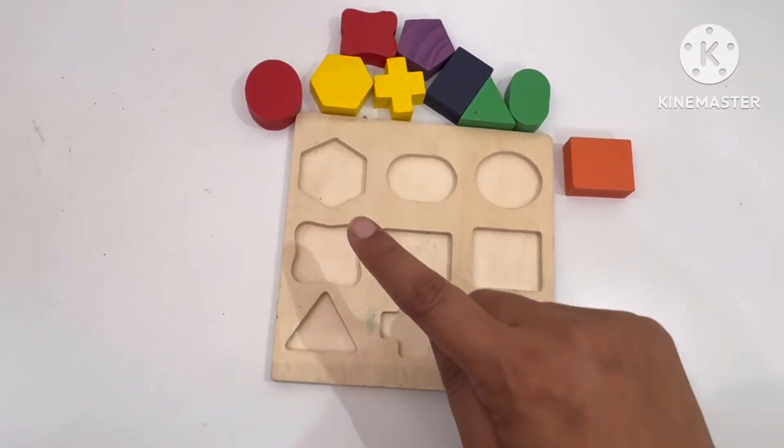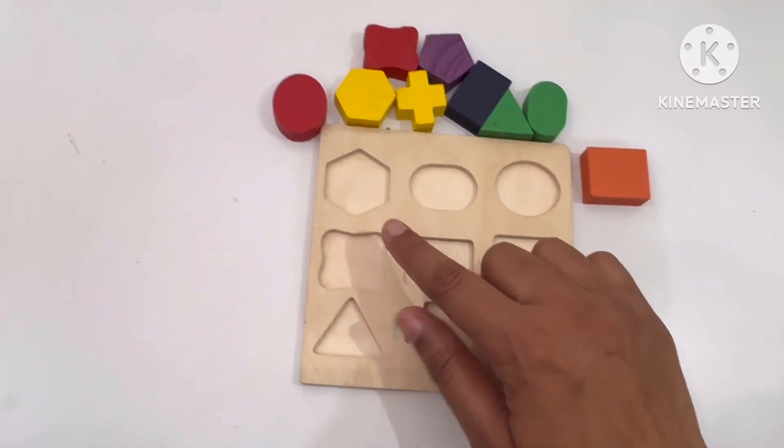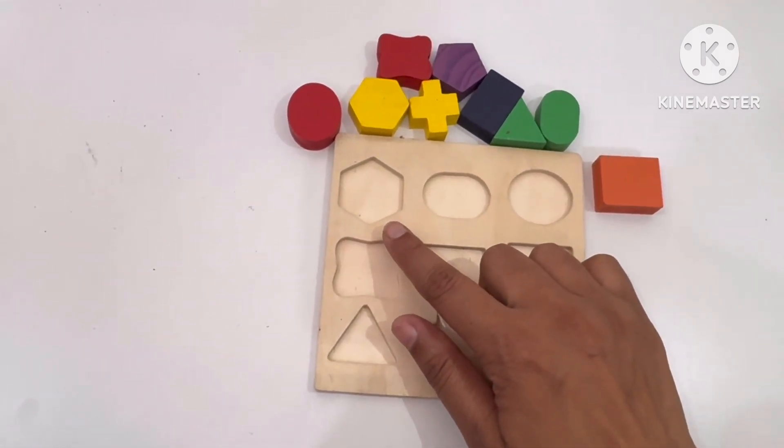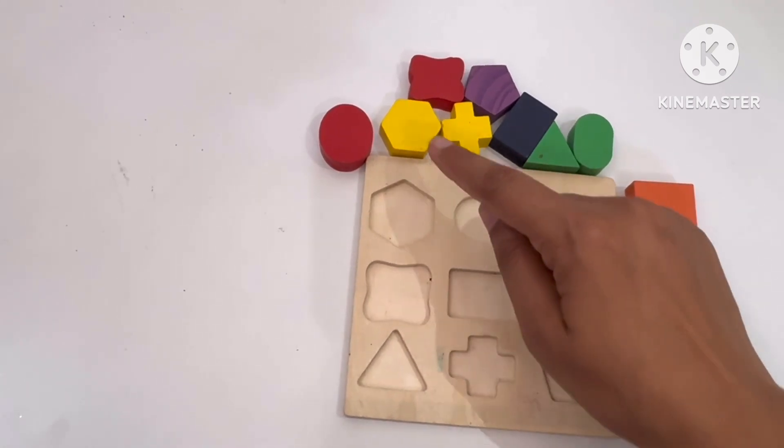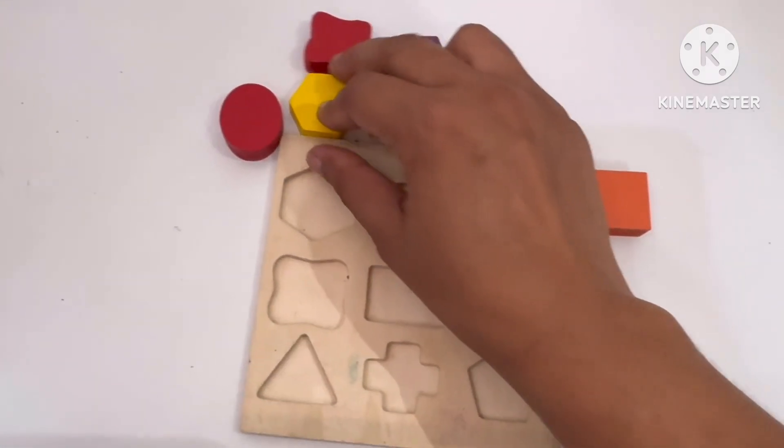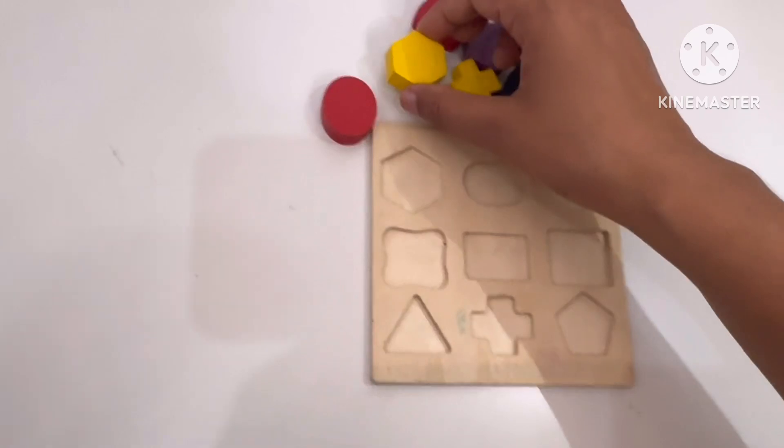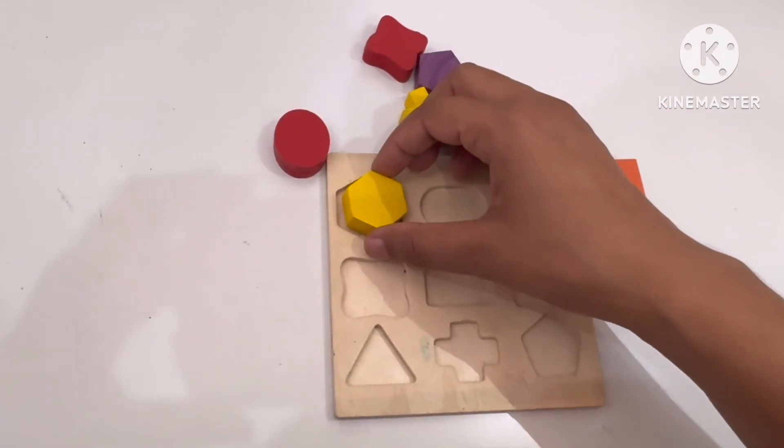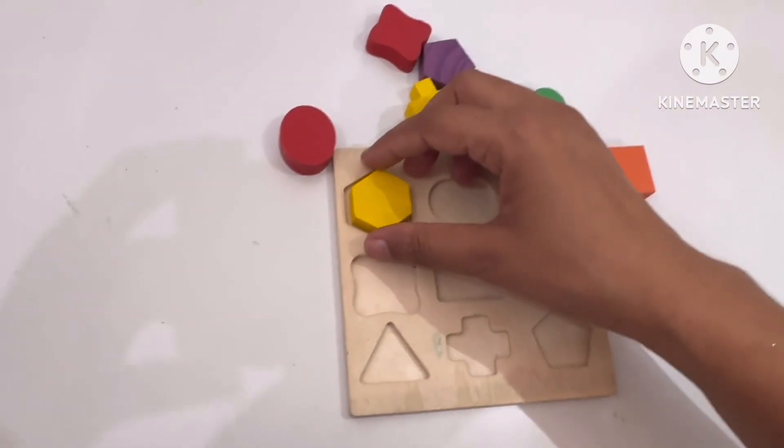What shape we have? We have the first, that is hexagon. And we have hexagon. Now we will place it into the box. Yay! It placed well.